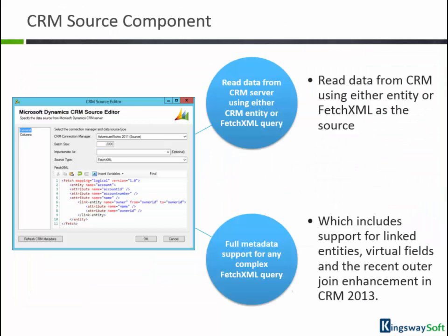In the source component, you can easily read data from CRM using either entity or fetch XML as a source. We also have the most sophisticated support for complex fetch XML queries. This includes support for linked entities, virtual fields, and the recent outer join enhancement in CRM 2013.